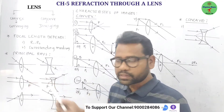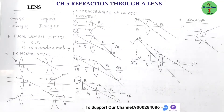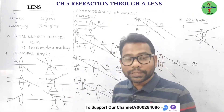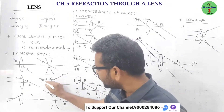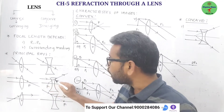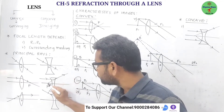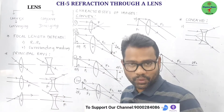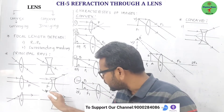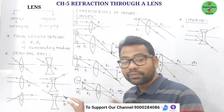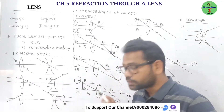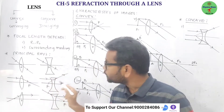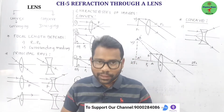For a concave lens: a ray through the optic center goes undeviated. A ray parallel to the principal axis diverges after refraction but appears to come from the second focus. A ray directed towards the focus goes parallel to the principal axis after refraction. Importantly, a convex lens has a real focus whereas a concave lens has a virtual focus.